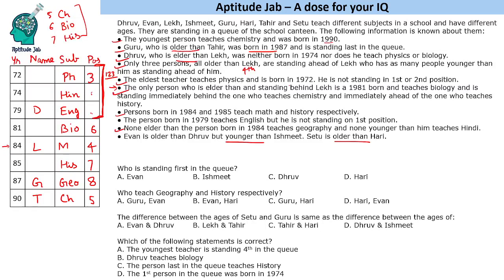The person born in 1979 teaches English and is not standing in first position, so he must be in second position — and that fills the first position too. Now we have four names left to fill. Ivan is older than Dhruv but younger than Ishmeet, and Setu is older than Hari. Remember: older means born earlier. So we can place Ishmeet, Ivan, Setu, and Hari accordingly.